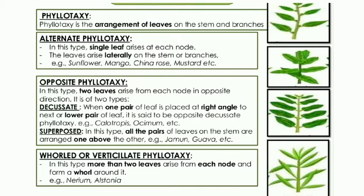In opposite superposed, successive pairs of leaves are parallel to each other rather than perpendicular. The third type is whorled phyllotaxy, also called multicellular phyllotaxy, where more than two leaves arise from each node and form a whorl — one circle. This is observed in Nerium and Alstonia.